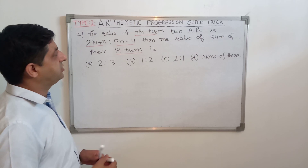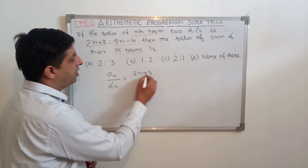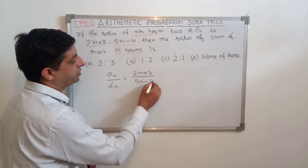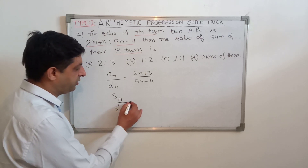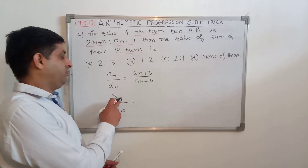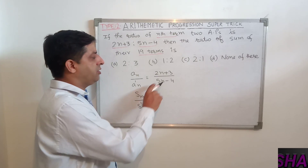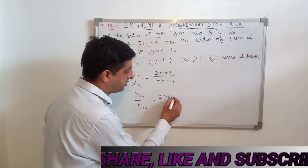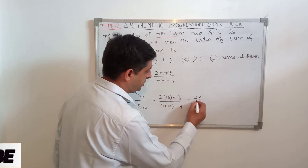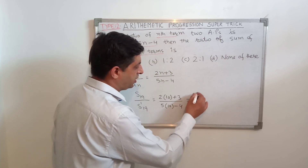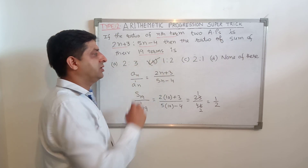We are given A_N / A'_N = (2N + 3) / (5N − 4), and we need to find S₁₉ / S'₁₉. The trick is to increase the number by 1 and then halve it: 19 + 1 = 20, and 20 ÷ 2 = 10. Put N = 10: (2×10 + 3) / (5×10 − 4) = 23 / 46. Cancelling gives 1/2, so the ratio is 1 : 2. This is the right answer, option B.